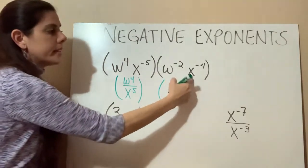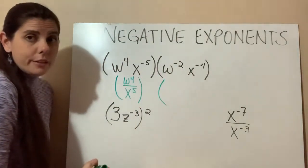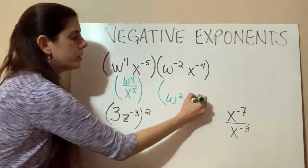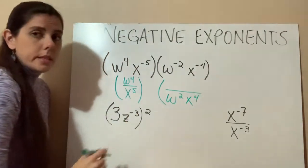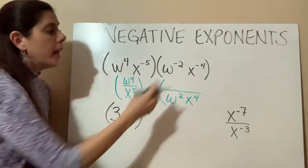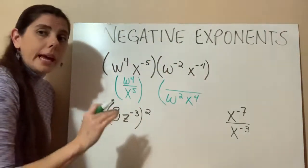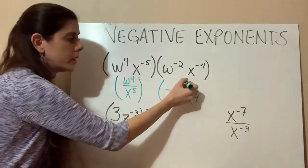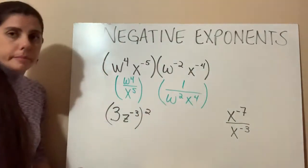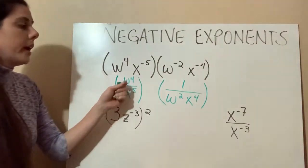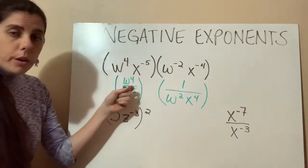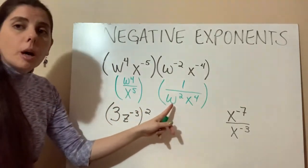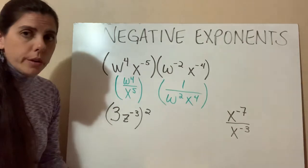In our next set, both of these have negative exponents. So both of them are going to move to the bottom with their bases. And as we move it to the bottom, it'll cancel out that negative sign. And what are we going to be left with on the top? So we have w to the 4th divided by x to the 5th, and that is multiplied by 1 over w squared times x to the 4th.